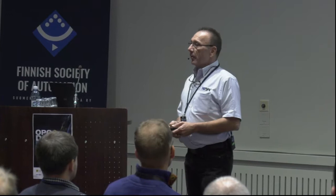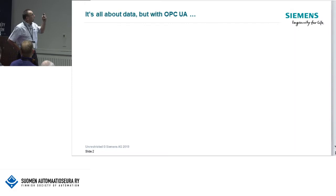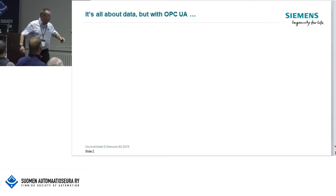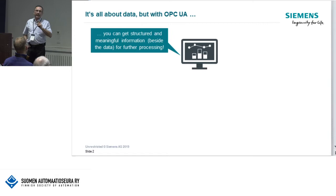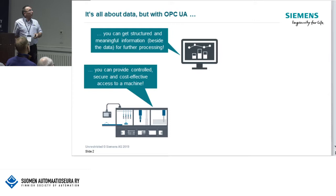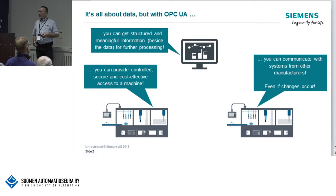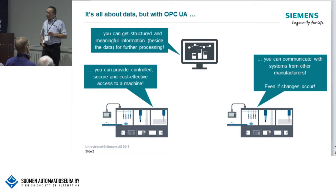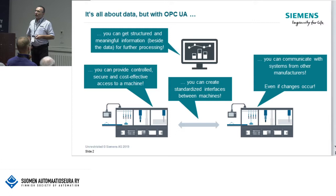Hello everybody, my name is Christian from Siemens. You heard a lot about companion specifications, OPC UA, and all those things — it's all about data. With OPC UA you can get structured and meaningful information beside data for further processing, you can provide controlled, secure, and cost-efficient access to a machine, communicate with systems from other vendors very easily and smoothly, even if changes occur, because OPC UA is by nature browsable so you can see if the interface is changing.